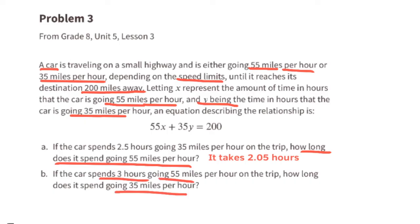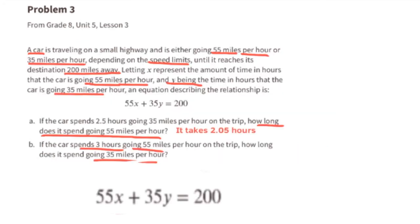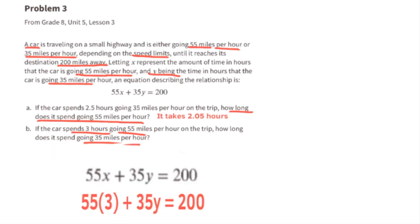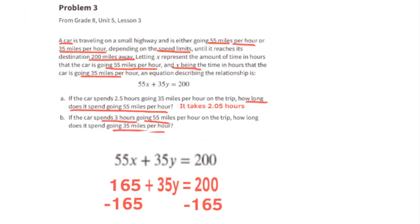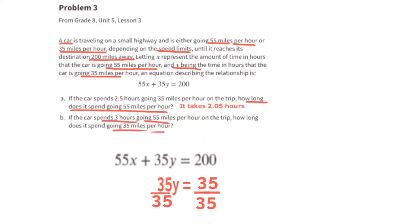Part B: if the car spends 3 hours going 55 miles per hour, starting with 55x plus 35y equals 200, substitute x with 3. 55 times 3 equals 165, so the equation reads 165 plus 35y equals 200. Subtract 165 from both sides: 35y equals 35. Divide both sides by 35: y equals 1. So if the car spent 3 hours going 55 miles per hour, the car would have spent 1 hour traveling 35 miles per hour.